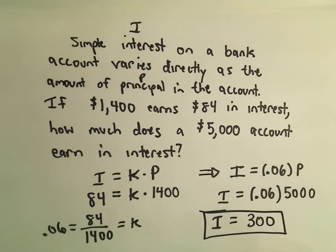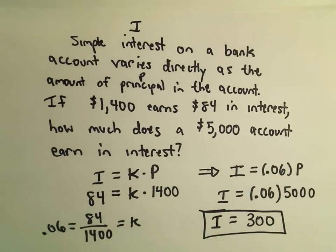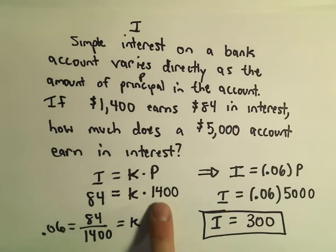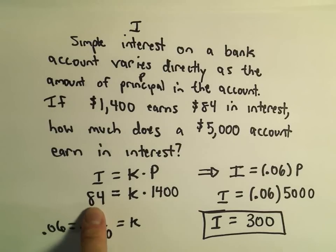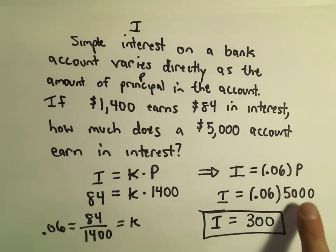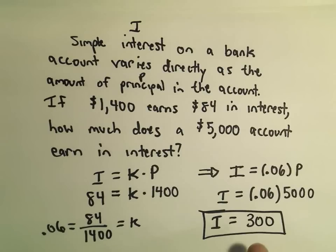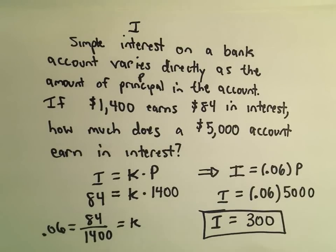So it says if you're earning the same amount of simple interest, whereas $1400 would make you $84 in interest, this tells us that if you put $5,000 in the bank, you're going to earn, under this scenario, $300 in interest.